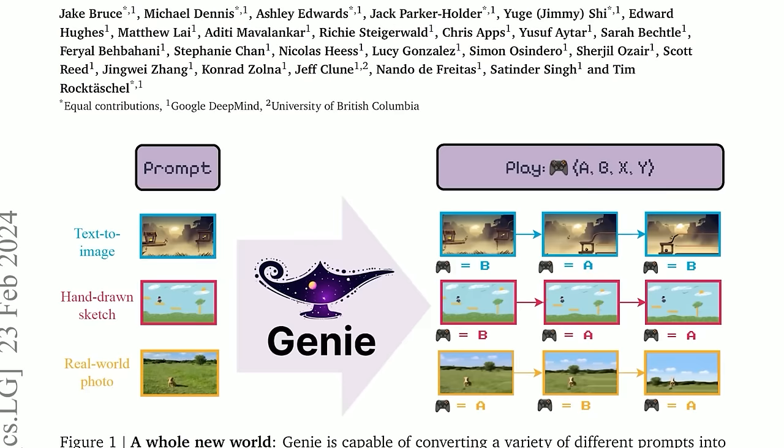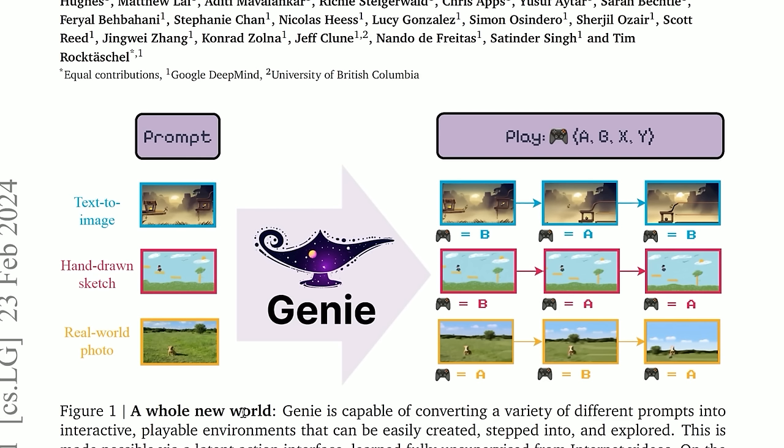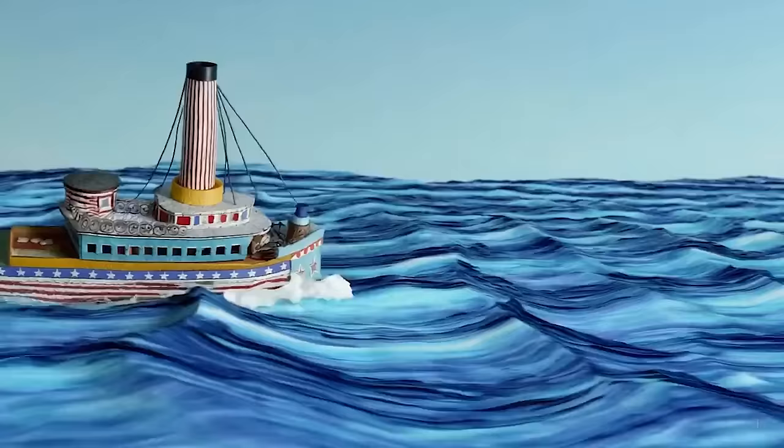This is how Google put it: Genie is capable of converting a variety of different prompts into interactive, playable environments. These can be easily created, stepped into, and explored. Before we get into the meat of the paper, however, I want to let your imagination run wild, because your mind, of course, went to the same place as mine — which is: imagine this integrated into Sora.